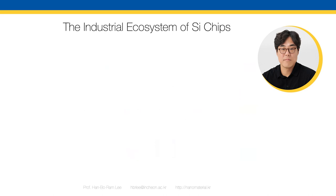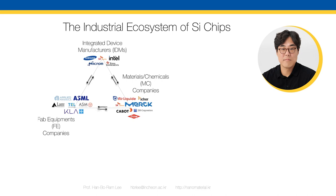What are the important players in the silicon chip industrial ecosystem? It used to be composed of three important parts. First, integrated device manufacturers (IDMs) — Samsung Electronics, SK Hynix, Intel — they design and fabricate their own chips. Second, fab equipment companies — they fabricate thin-film deposition tools or photolithography tools: Applied Materials, Lam Research, ASML, TEL, and others. Third, material and chemical companies — Air Liquide, Merck, SK Siltron — they produce chemicals and materials. These three different types of companies collaborate to fabricate silicon chips.